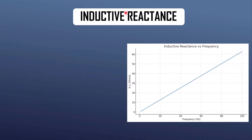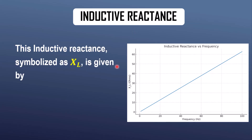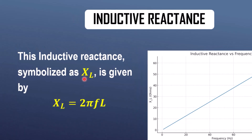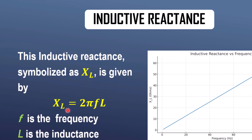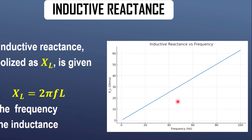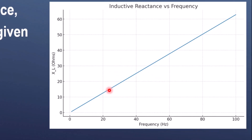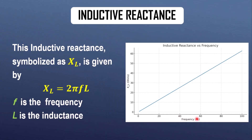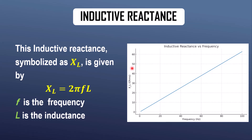The first is the inductive reactance. The inductive reactance is symbolized by XL, and the formula is XL equals 2 pi FL, where F is the frequency and L is the inductance. On the right side you can see the graph between reactance and frequency. As the frequency increases, the inductive reactance also increases.